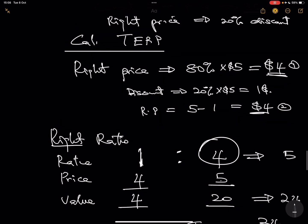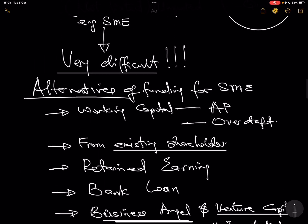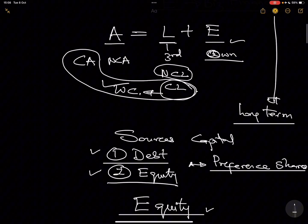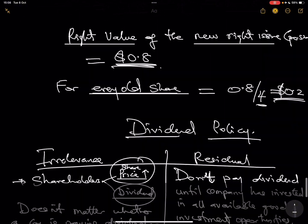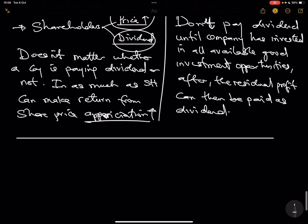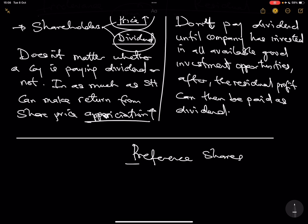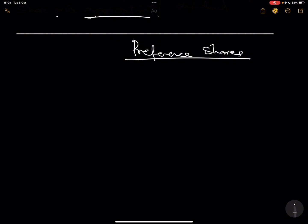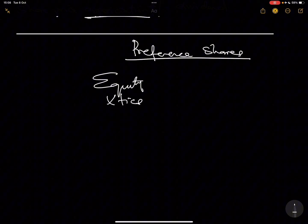Remember, there is one instrument that behaves very funny — it behaves both as debt and as equity, and that is preference shares. Let's quickly look at that to close this lecture. Like I said, it behaves like debt and also behaves like equity. I'm going to share some of those characteristics that make it look like equity and some that make it look like debt, laid out in two columns: equity characteristics and debt characteristics.